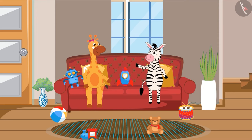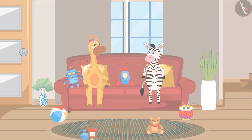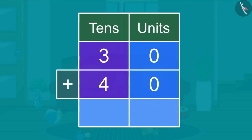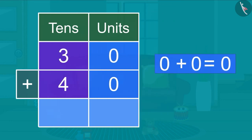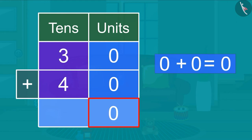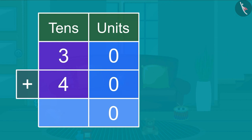How much money do we have in total? Come, let's find the answer using addition. First we will look at the units section. Zero plus zero equals zero, so we will write zero under the units section.